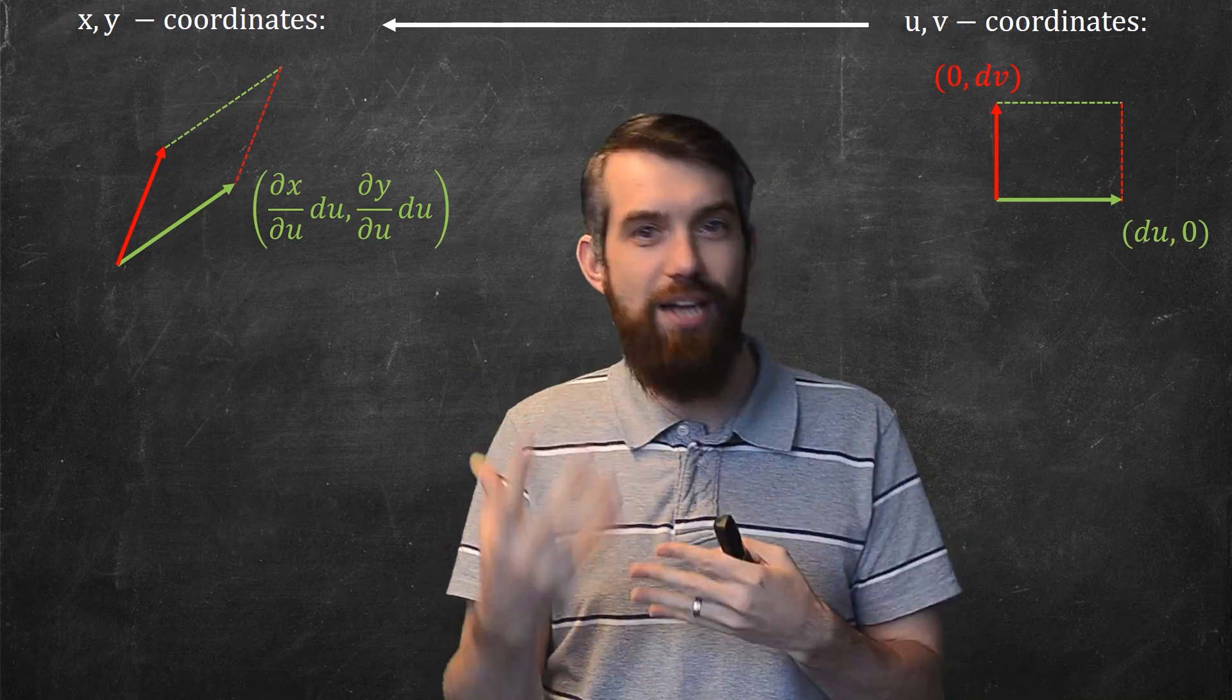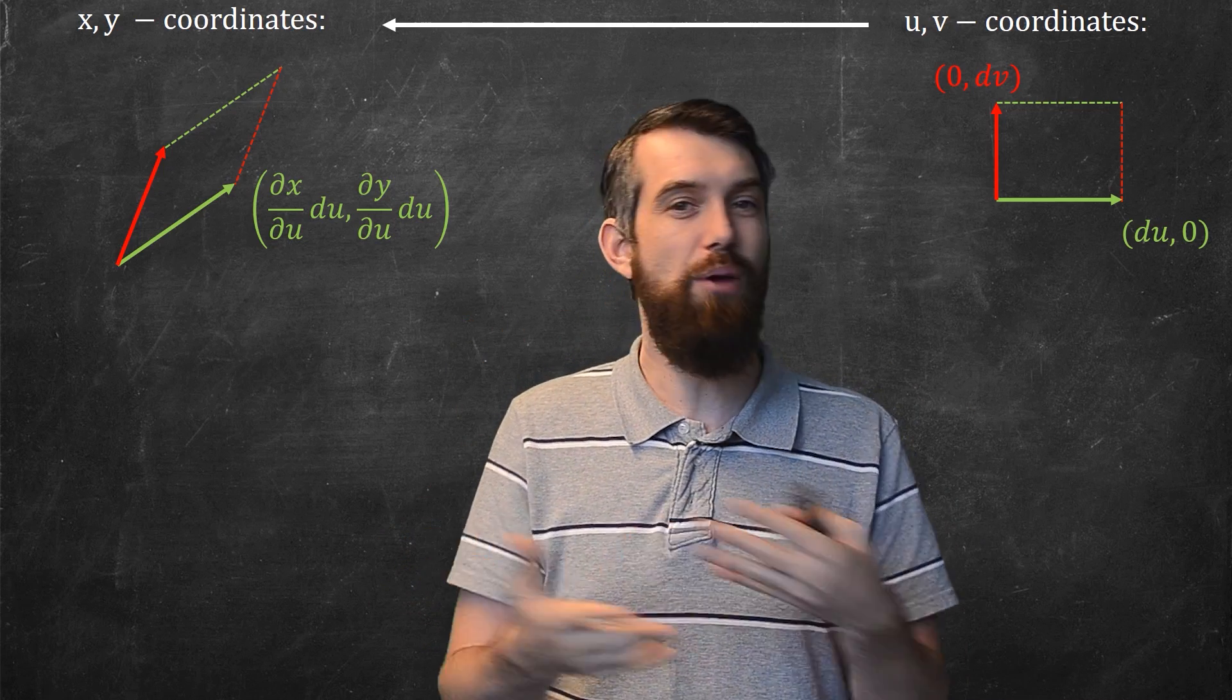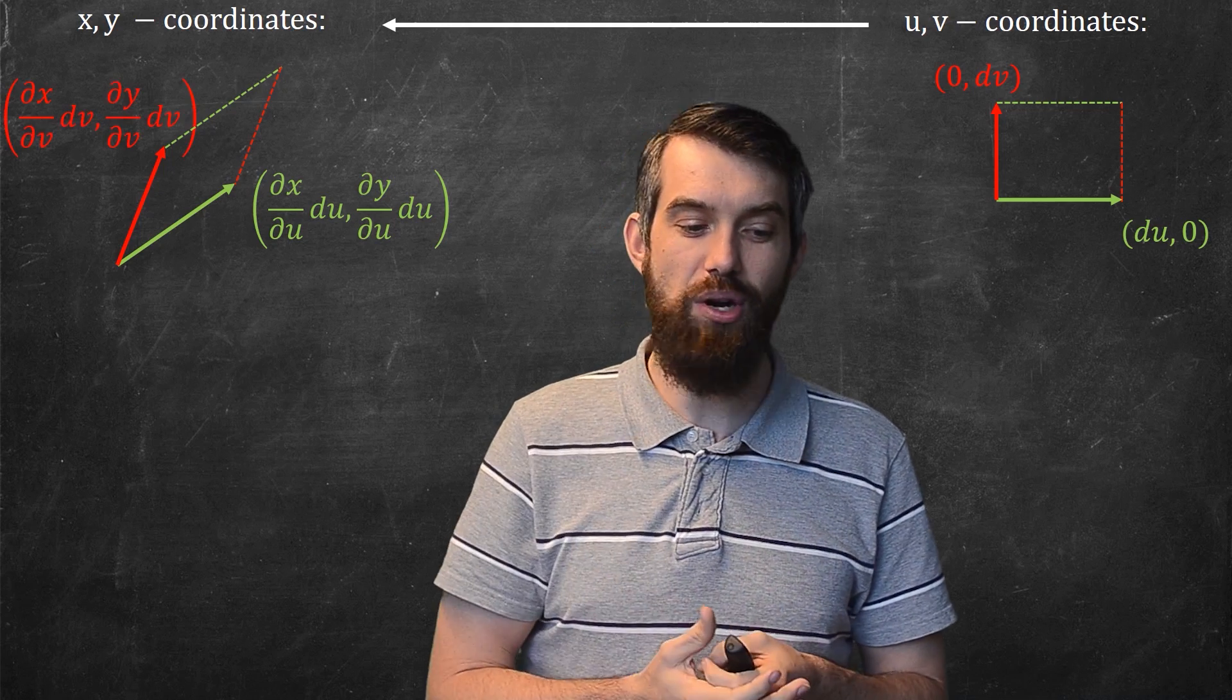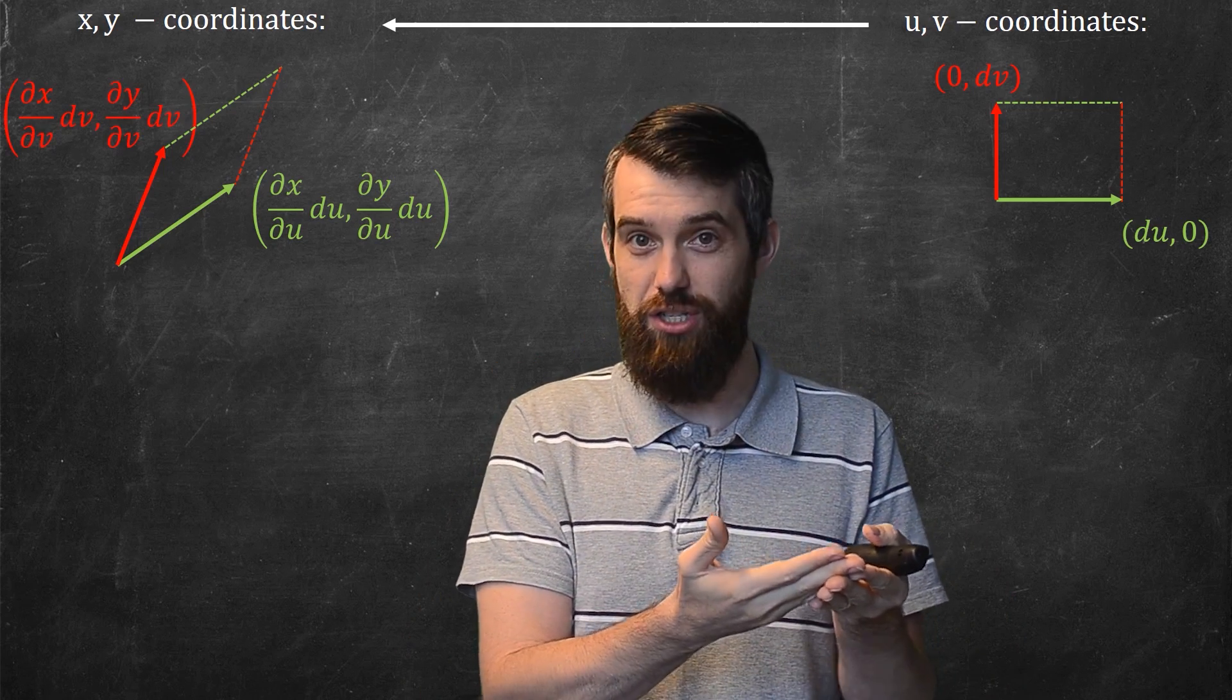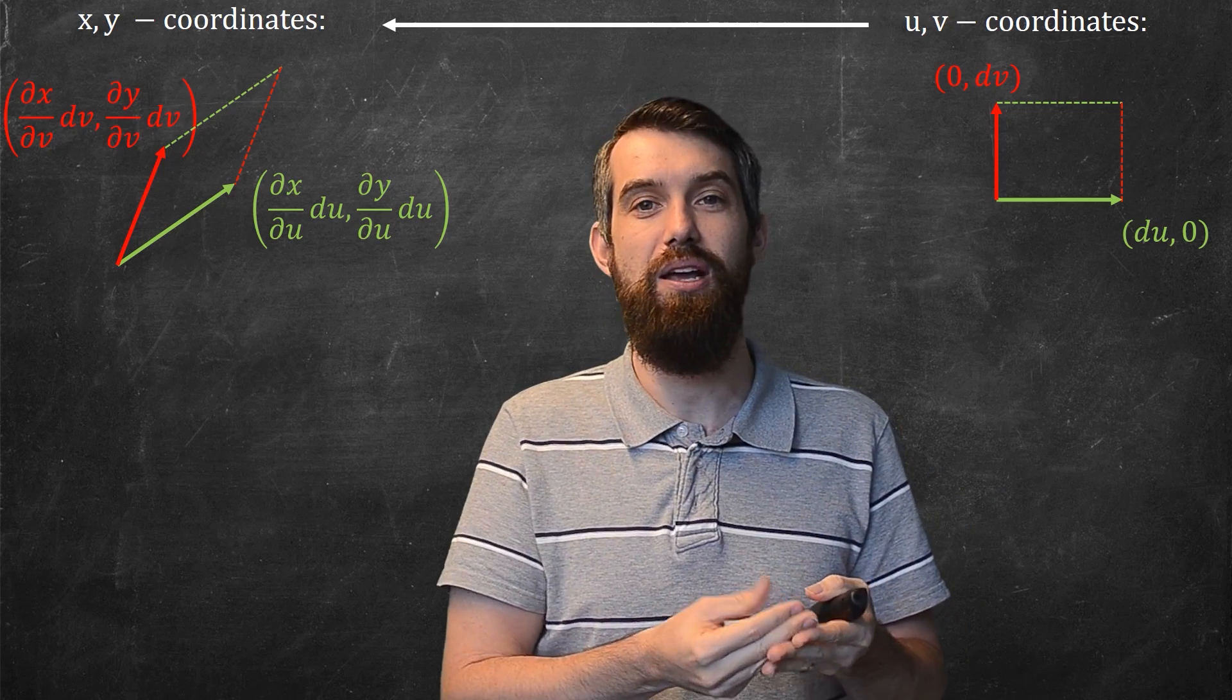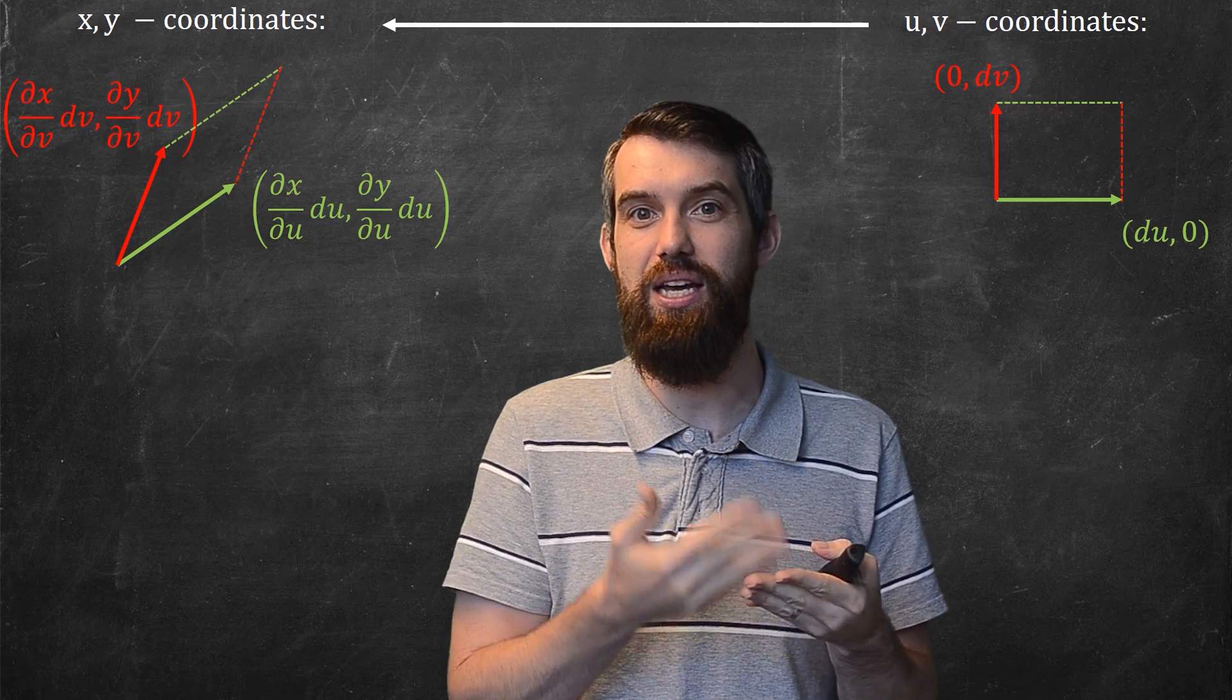Then likewise for the red vector, you get a similar kind of construct. The nudge in the x direction is just the change in x with respect to v times this dv and the change in the y direction is the change in y with respect to v times dv.